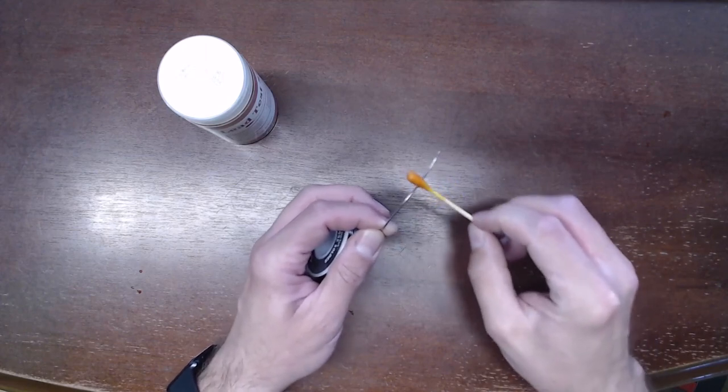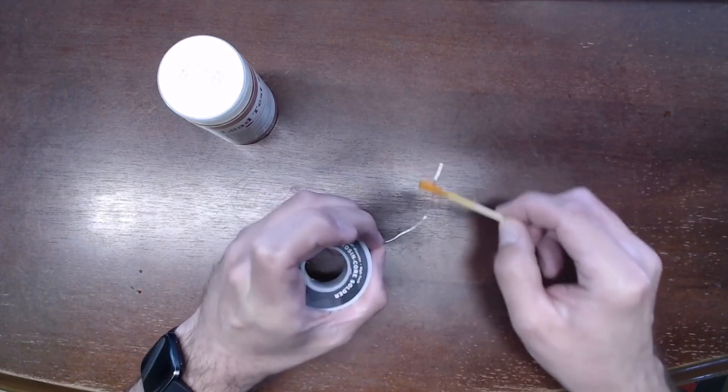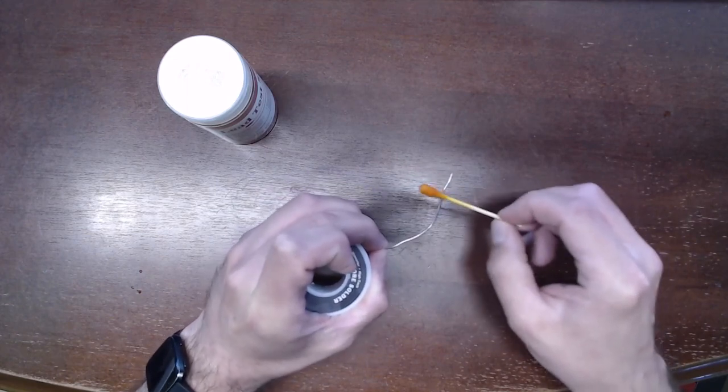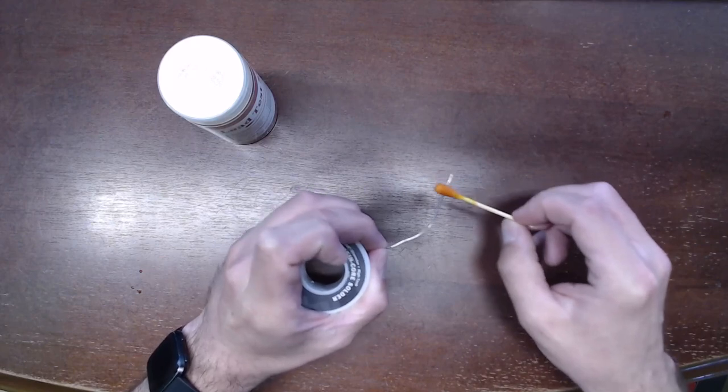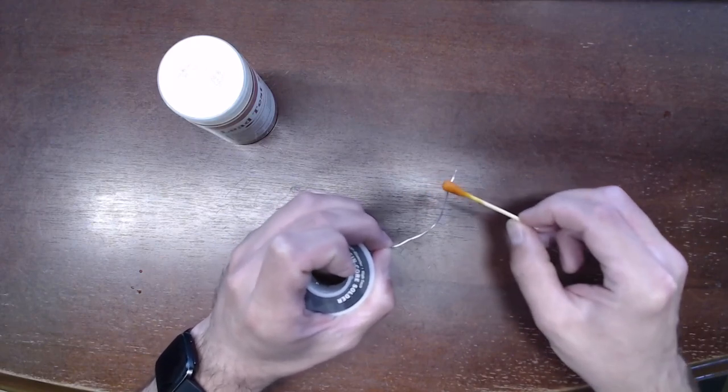And if you're wondering what I'm rubbing, this is actually some solder, which should actually be, I believe, 63% lead and 37% tin. So we definitely would expect a positive test here.